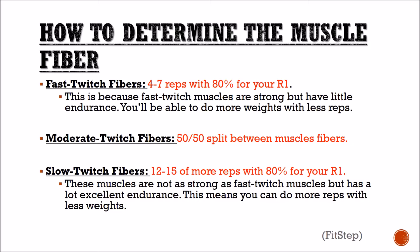In this slide I have the number of reps that determine the type of muscle fibers you are working. As you can see, fast twitch muscle requires you to do 4 to 7 reps due to how quickly it can become fatigued, whereas slow twitch muscle goes from 12 to 15 reps due to its excellent endurance.